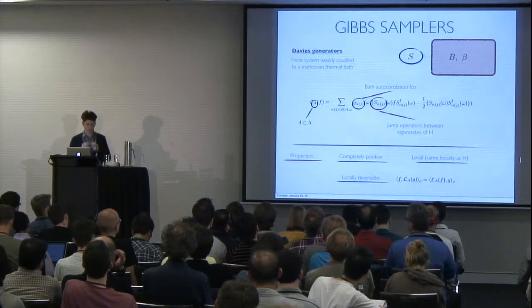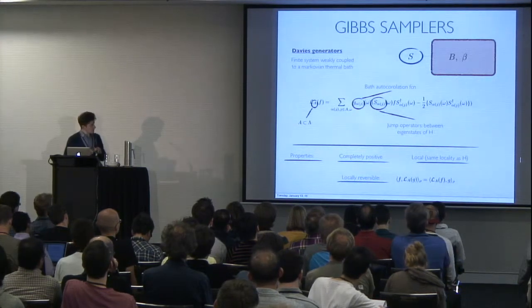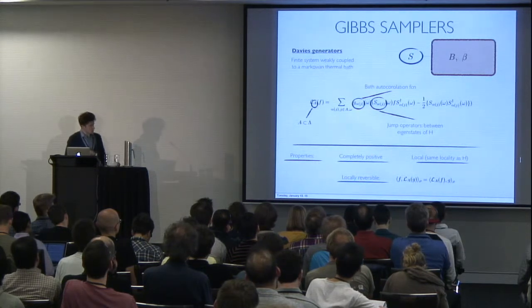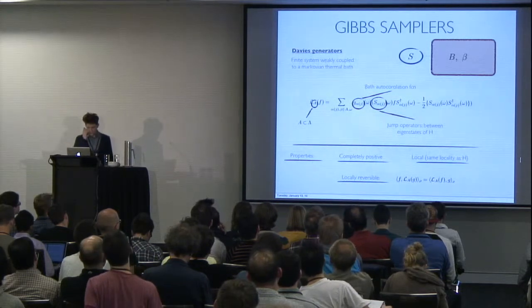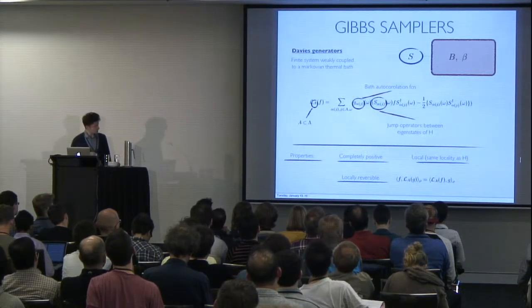on a finite number of lattice sites that don't grow with the system size in particular. They have the same locality as the Hamiltonian, meaning these S's have the same range as the Hamiltonian.